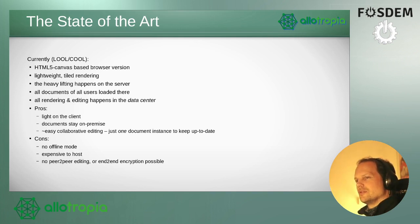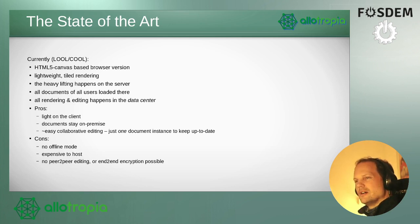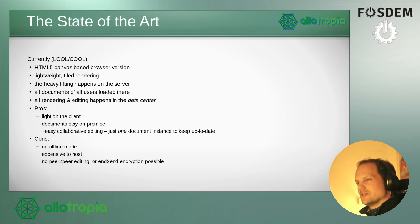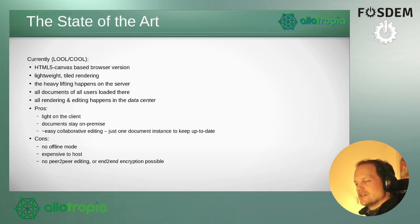Right now we have LibreOffice Online, or rather Collabora Online, which is an HTML Canvas-based browser version of LibreOffice. It's quite lightweight — uses tile rendering — and most of the heavy lifting, with LibreOffice actually running on the server, which also means all documents are loaded there. All the rendering, interaction with the document, and all the editing happens on a big host in a data center. Pros are it's very light on the client side — essentially just some bitmaps to render — documents stay on-premise, never leave the data center, and collaborative editing is very easy because you essentially have just one document to keep in sync, so there are no conflicting distributed system issues to solve.